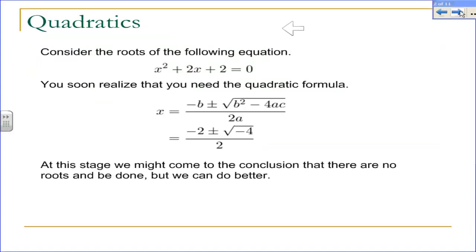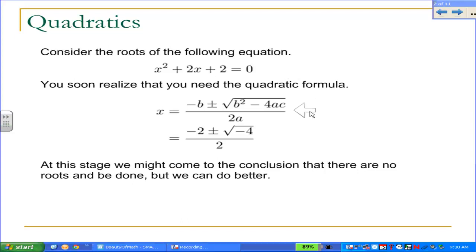It starts in pretty familiar territory: solving quadratic equations. Here I have the quadratic equation x² + 2x + 2, and I want to solve it. The first thing you'd probably want to do is try to factor it, and it won't take you long to realize you cannot. So the next logical thing is to pull out the quadratic formula, substitute in your values for a, b, and c, simplify it, and you end up with this.